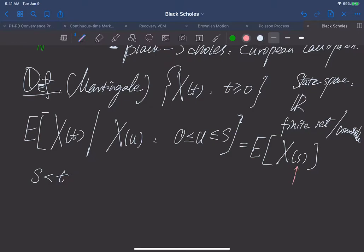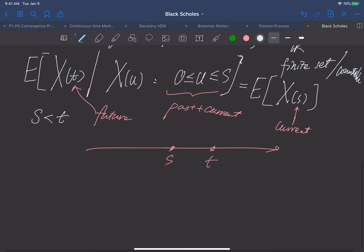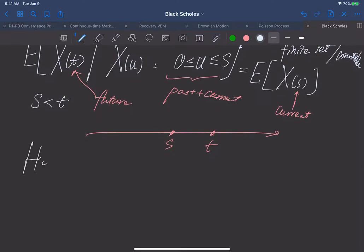If we look at this formula, s is like a time, here this is our current time, and all these are our past and current observations, and t is something in the future. This says the best estimate of the future is nothing but the current value of this stochastic process. Let me give you some heuristics about martingale given the definition.